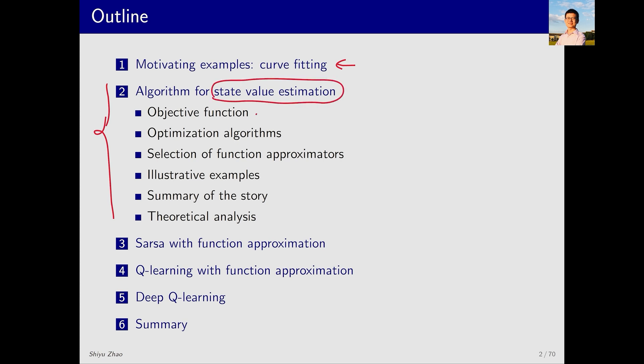It discusses how to perform policy evaluation to estimate state value with a given policy. Specifically it includes how to establish an objective function, how to optimize this objective function, what kind of value functions I should use, and other topics. This section will not cover action values or how to obtain optimal policies, but it's very important because it reveals the very fundamental ideas of value function methods. Once you understand the ideas, the subsequent algorithms will be quite simple. In this session we will introduce three algorithms. The first algorithm extends the previous SARSA to incorporate value function representation. The second one is to combine q-learning with value function methods. The third is the famous deep q-learning algorithm. Afterwards I will give a summary.